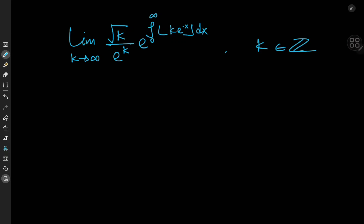Today we have an interesting calculus problem that ties together lots of interesting topics. We have the limit as k tends to infinity of square root k divided by e to the k, times e to an integral involving the floor function. And k here is an integer. It looks really cool, but how on earth do we approach this?